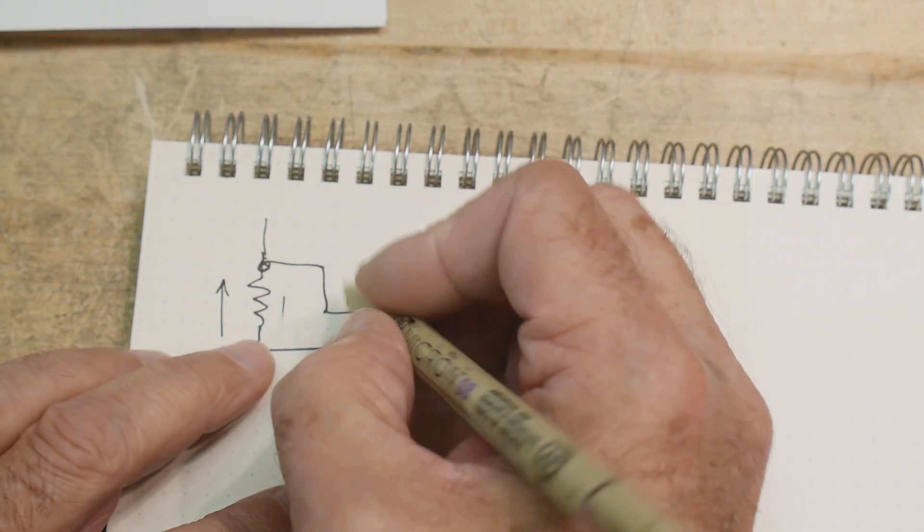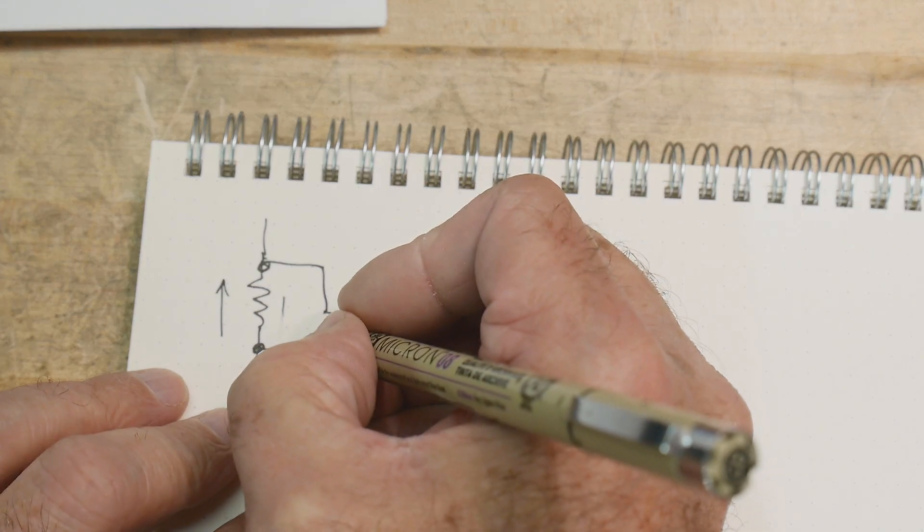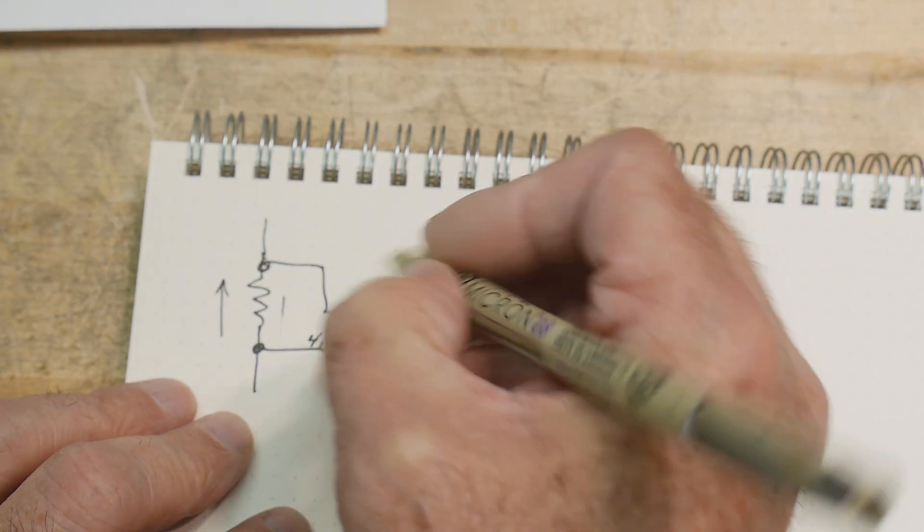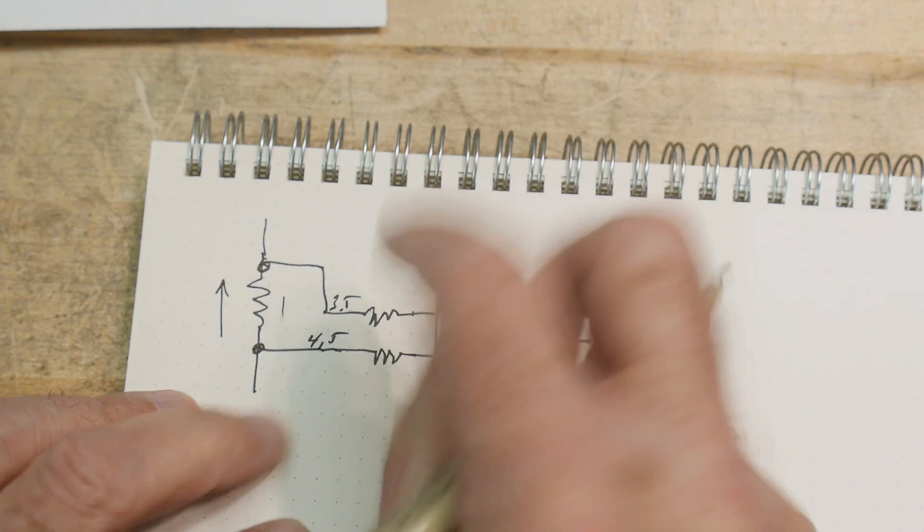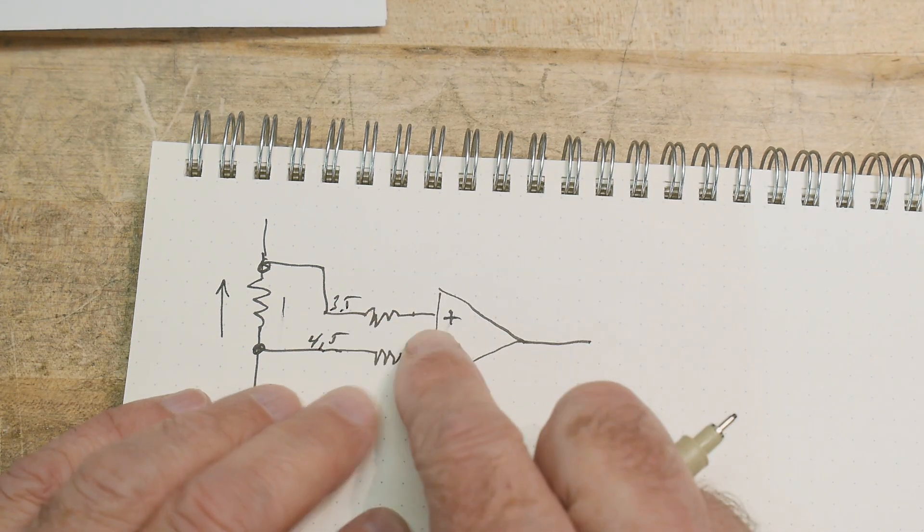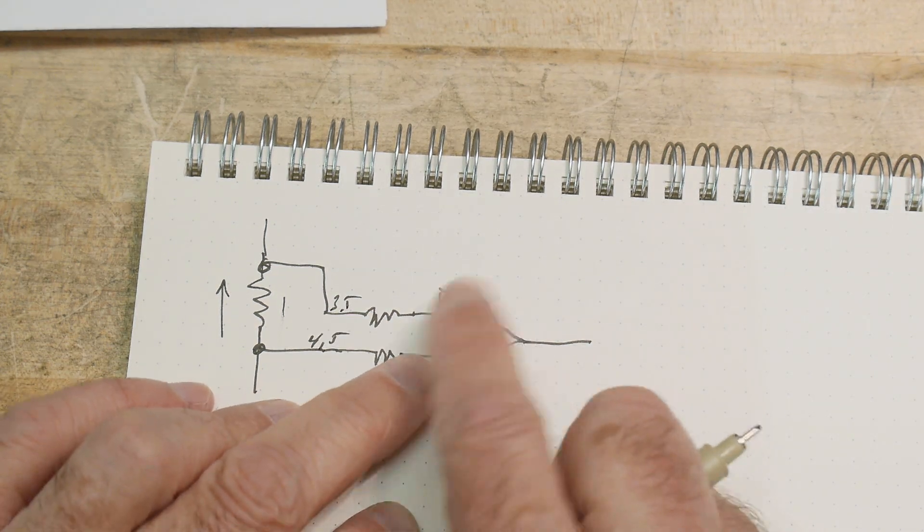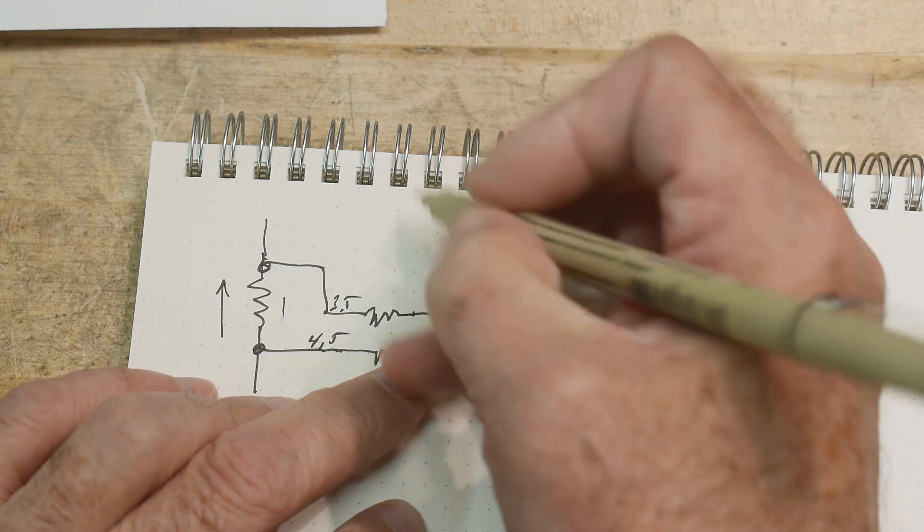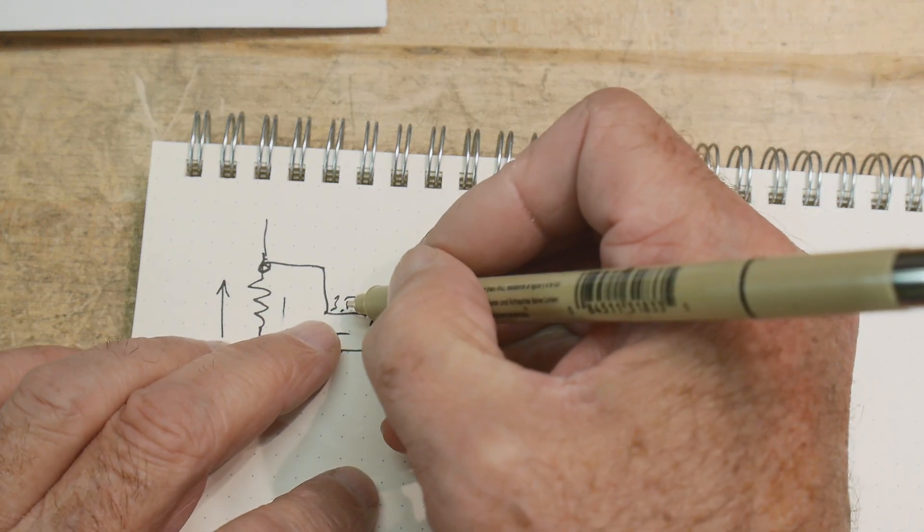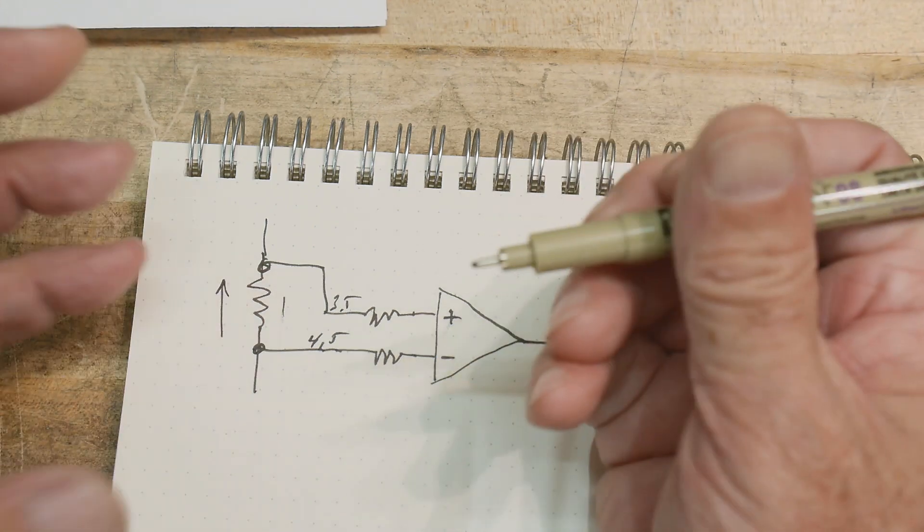And so we're not going to have the right voltage here. Like in our case, we said we had four and a half on this side and we had three and a half on this side and it's always going to be comparing three and a half to four and a half and it's never going to work right.